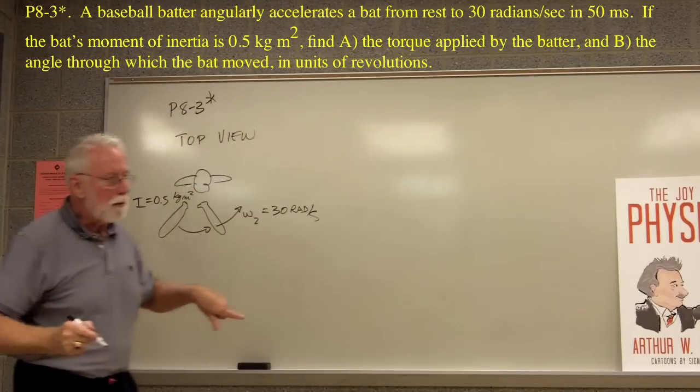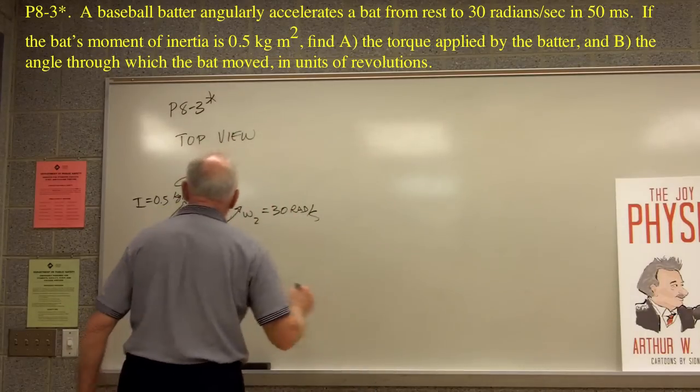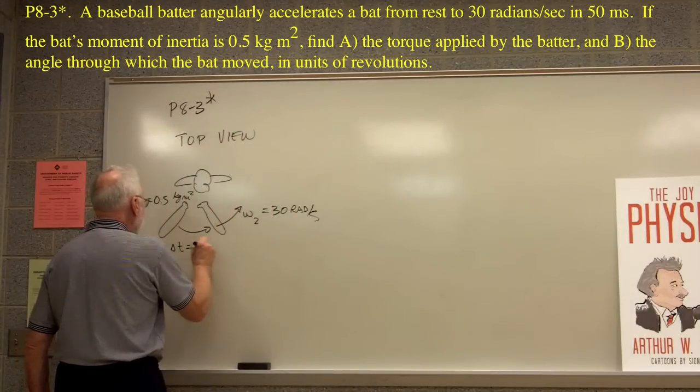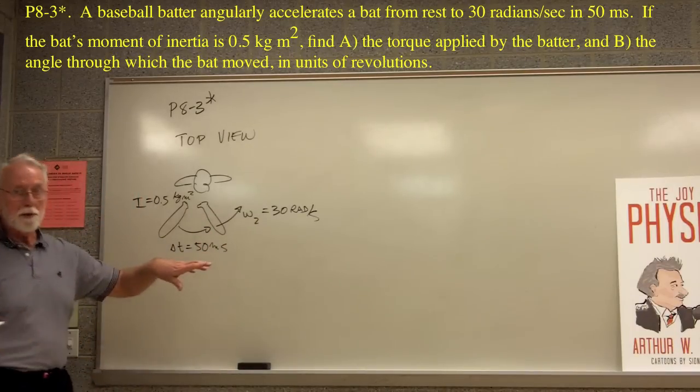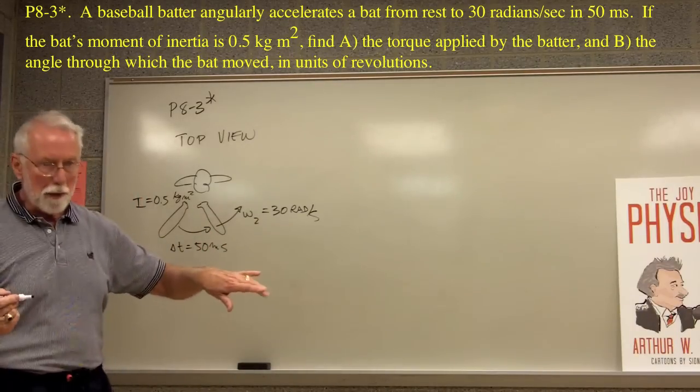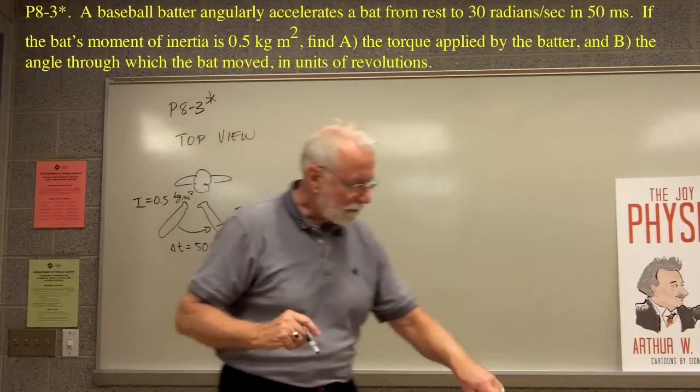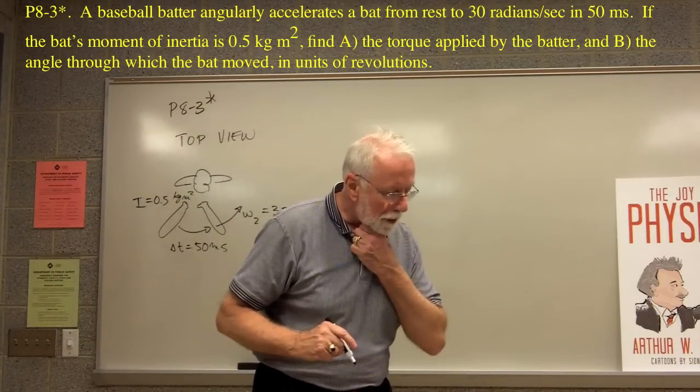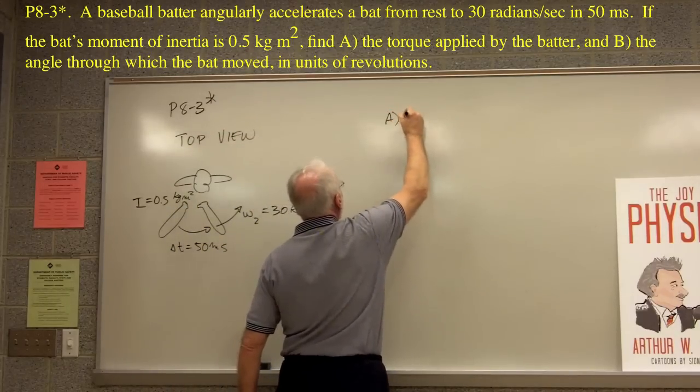And what else? We know that the moment of inertia of the bat is 0.5 kilogram meter squared. I is 0.5 kilogram meter squared. That's the moment of inertia of the bat. And what else do we know? And that is, he tells us that the delta T for this to happen is 50 milliseconds, ms. Milliseconds. M is a milli. Got to be careful. M stands for milli, also stands for meters. Got to watch the difference. So then, what is that we want to find?